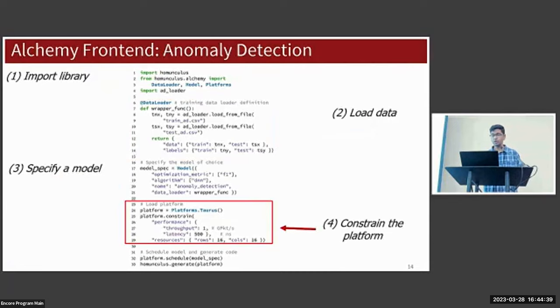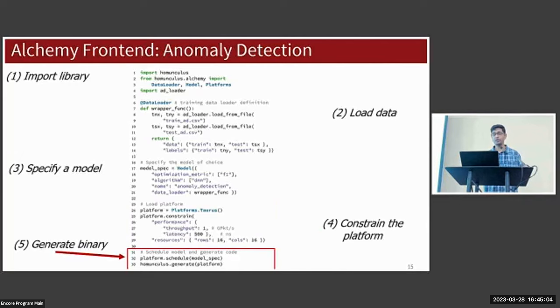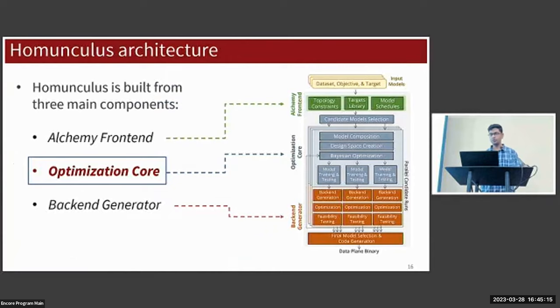In step four we're going to declare that we're using the Taurus platform as the switch where we're going to install our data plane models. We're going to constrain the performance to line rate - that's one giga packet per second or one inference per nanosecond in this case - and then we're going to constrain the number of resources available to it. Finally in step five we're going to schedule our model onto the platform and then generate the binary. That's all in less than 35 lines - our Alchemy code is done and Homunculus can generate the desired model.